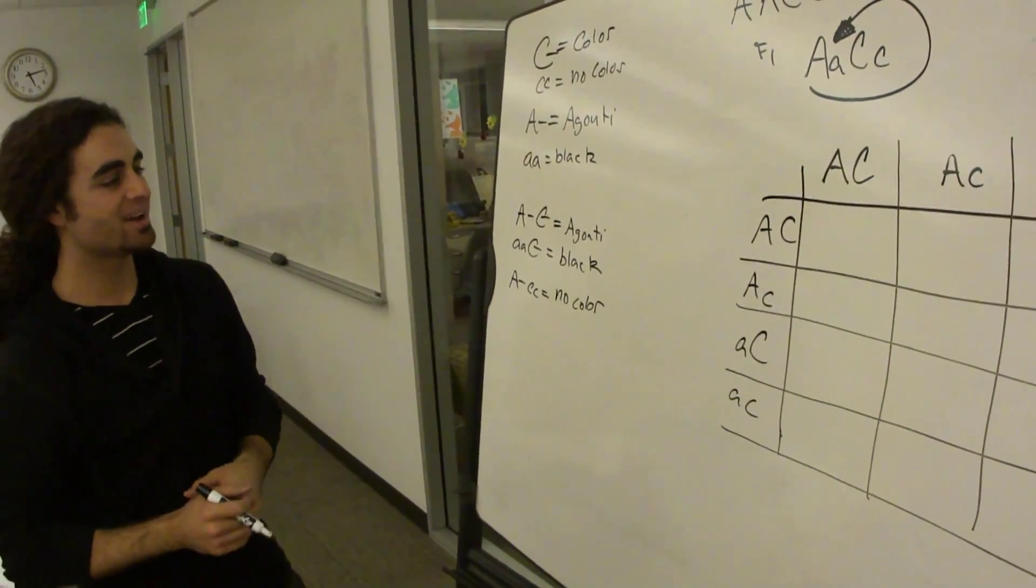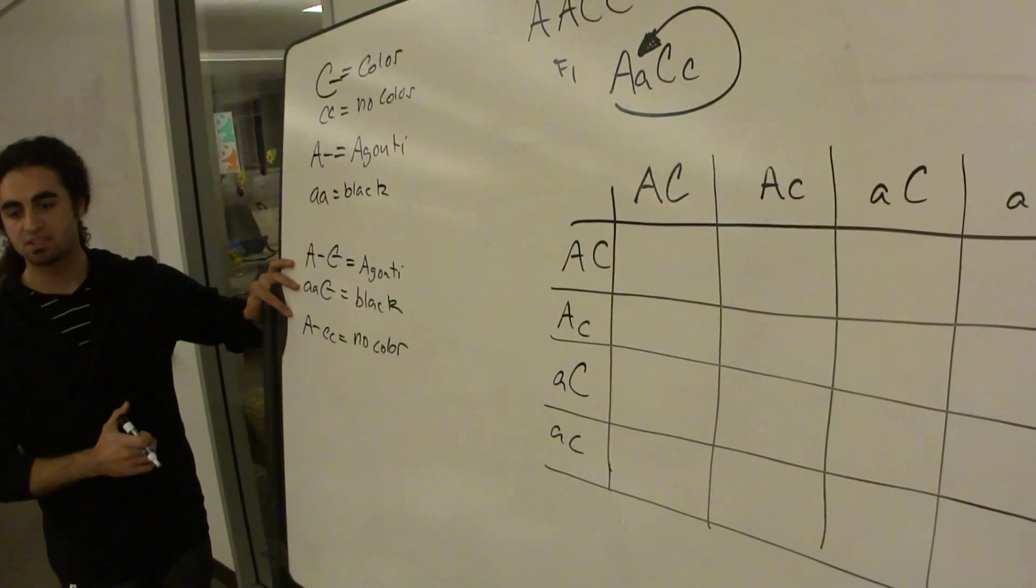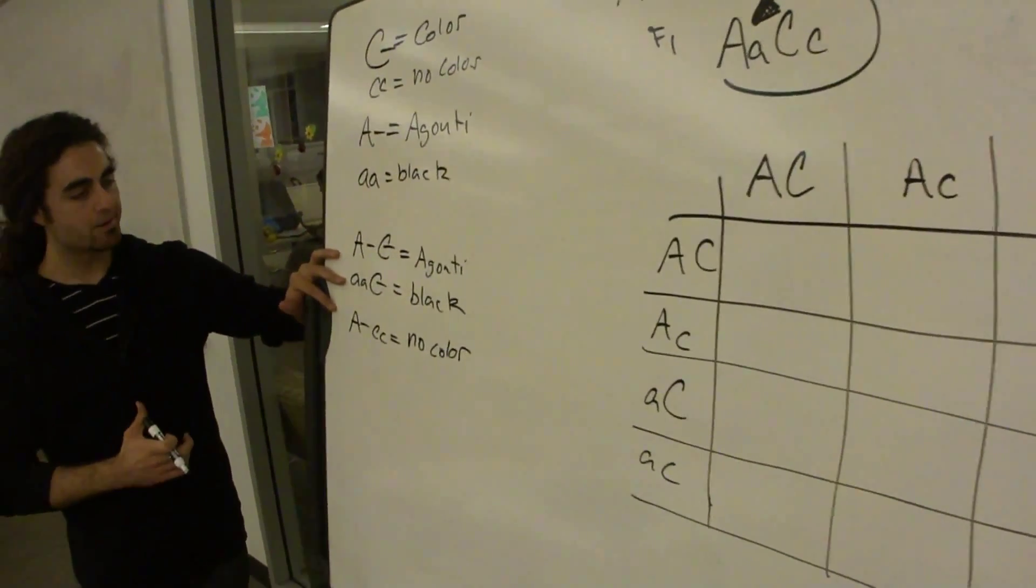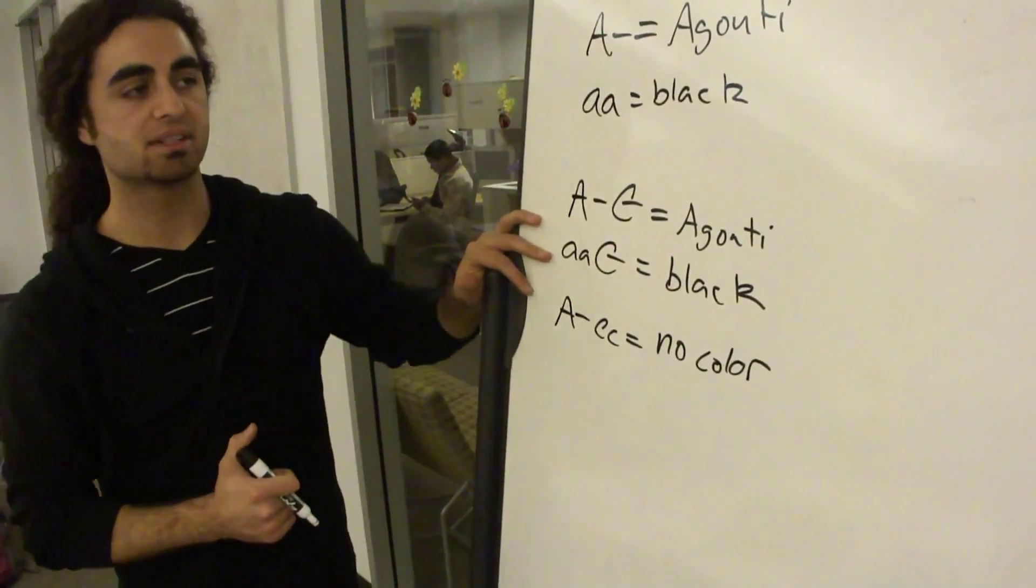We're going to fill in our Punnett square, and then use what we came up with earlier to see what the phenotype of each of the genotypes are. Okay? So you guys all at the same point? Yeah, I'm going to start filling it in.